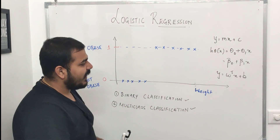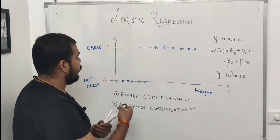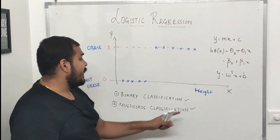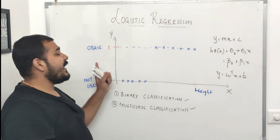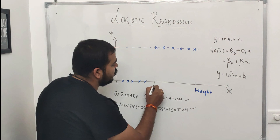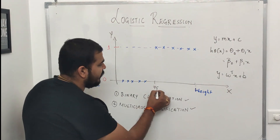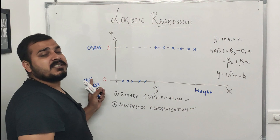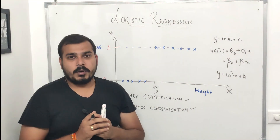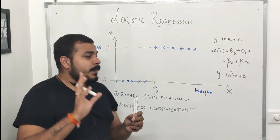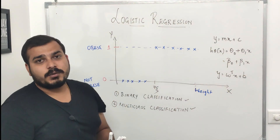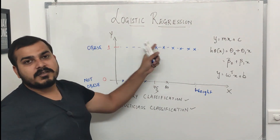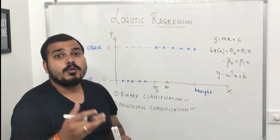Let me take a simple use case. On the x-axis I have a parameter called weight, and on the y-axis I have my output. Based on weight I'm categorizing people into 'not obese' and 'obese'. If weight is greater than 75 kg the person is obese; if less than 75 kg the person is not obese. Now suppose tomorrow I have a weight value and I need to classify whether that person is obese or not.